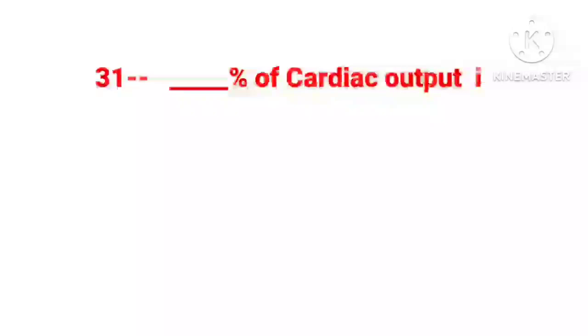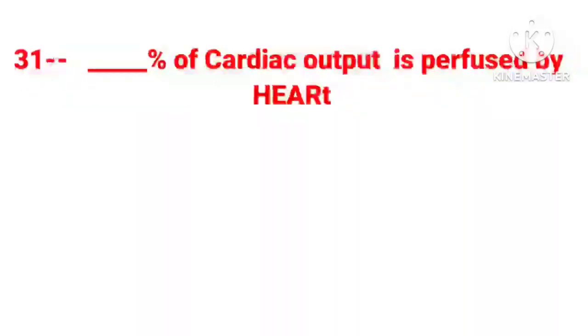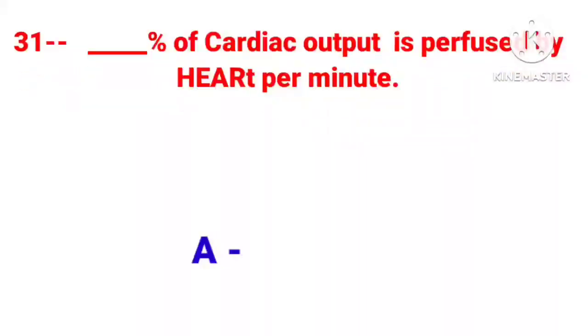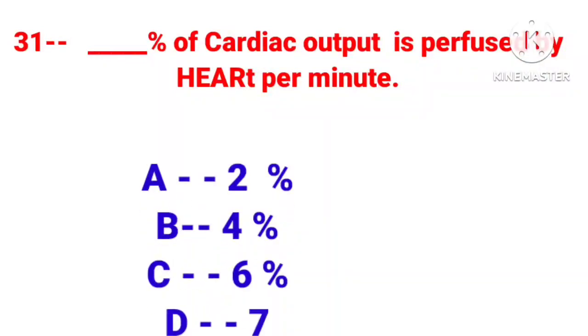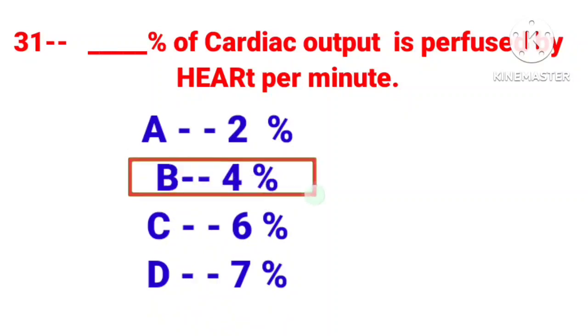Question number 31: Dash percent of cardiac output is perfused by heart per minute. Option A: 2%, B: 4%, C: 6%, D: 7%. Correct answer is Option B: 4%.